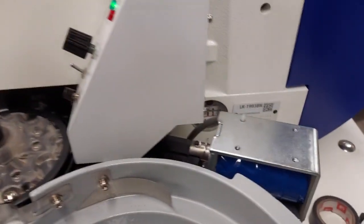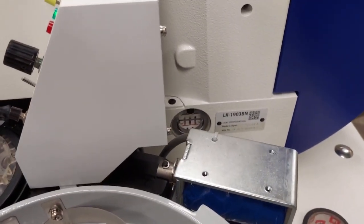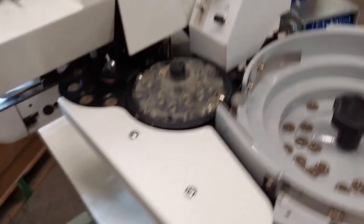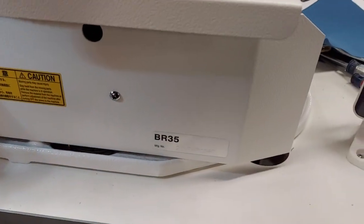Okay, so this is a Juki LK1900BN and it has a button robot on here, a BR35.